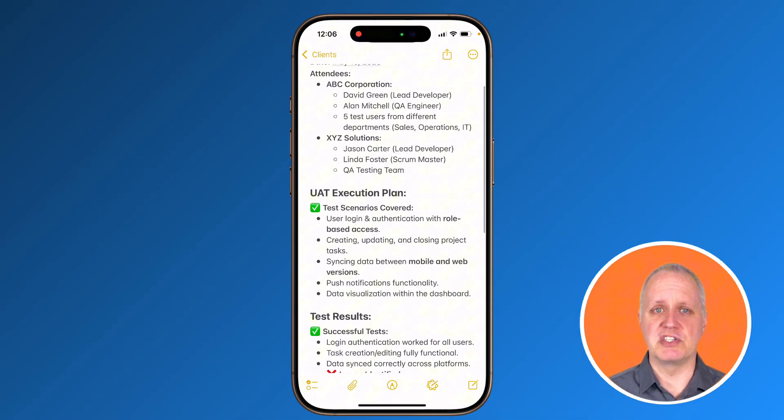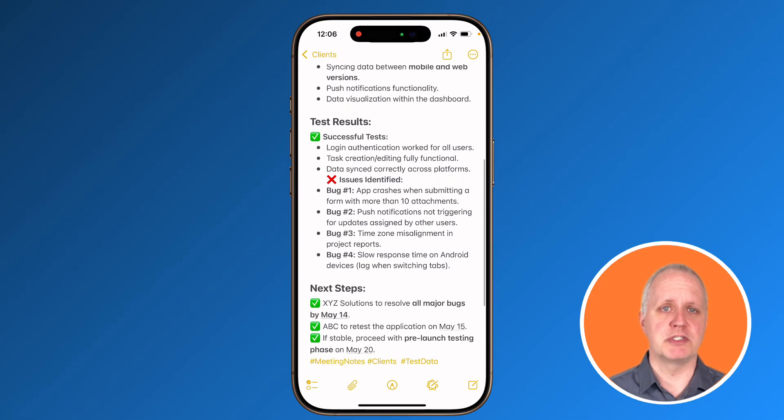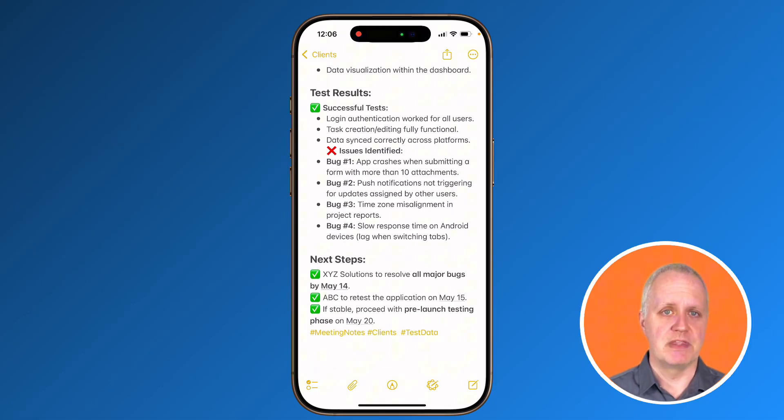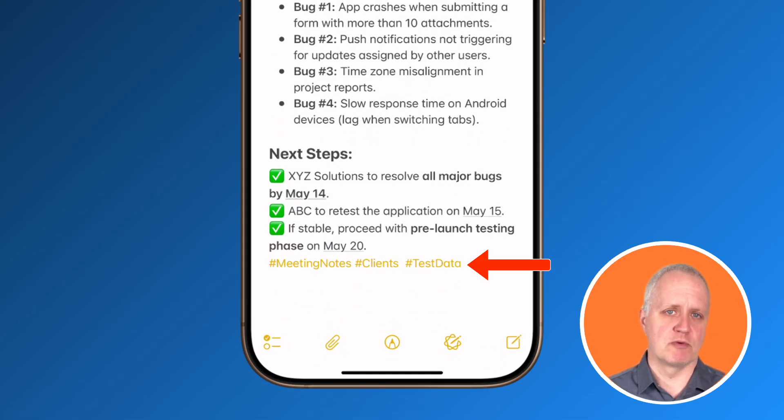Now let's take smart folders to the next level. Instead of just using single word tags, combine multiple tags to refine your organization. For example, if you have a folder for work, adding work and also adding urgent ensures high priority notes show up instantly.